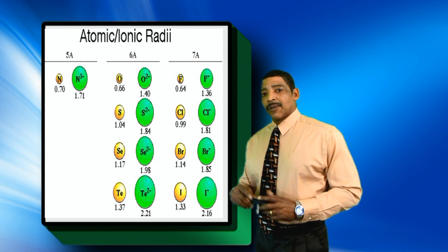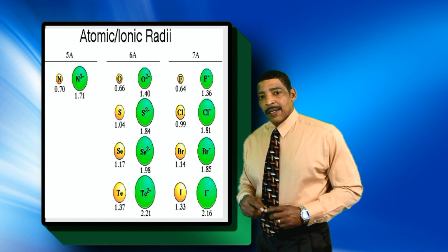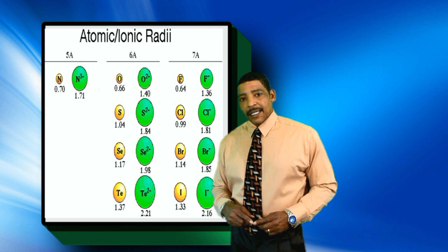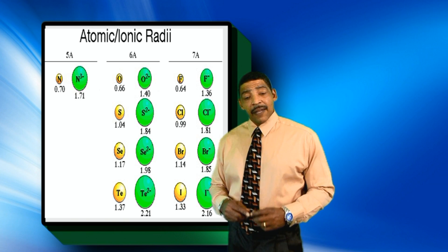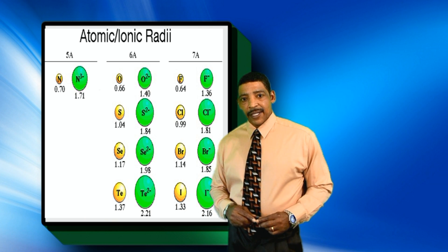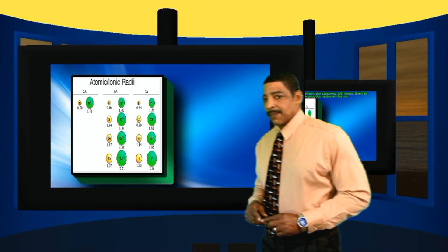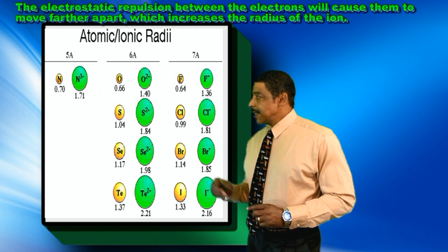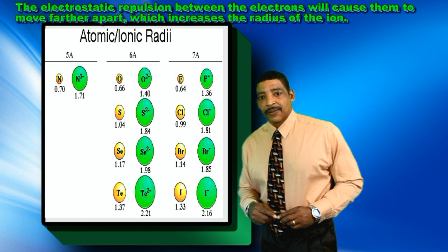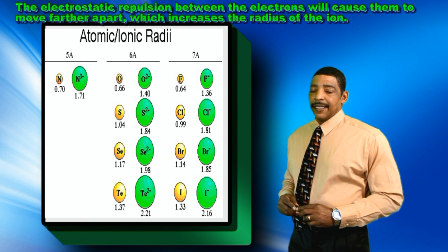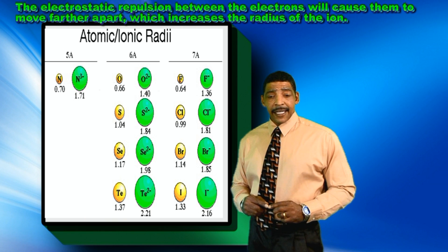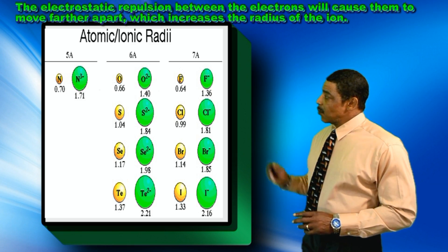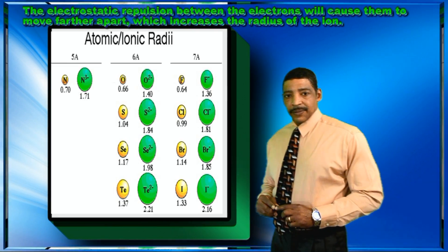During the reduction process, where electrons are gained, the resulting anion will have a larger radius than the original atom. For example, the nitrogen atom has a radius of 0.70 angstroms, and the nitrogen anion has a radius of 1.71 angstroms.